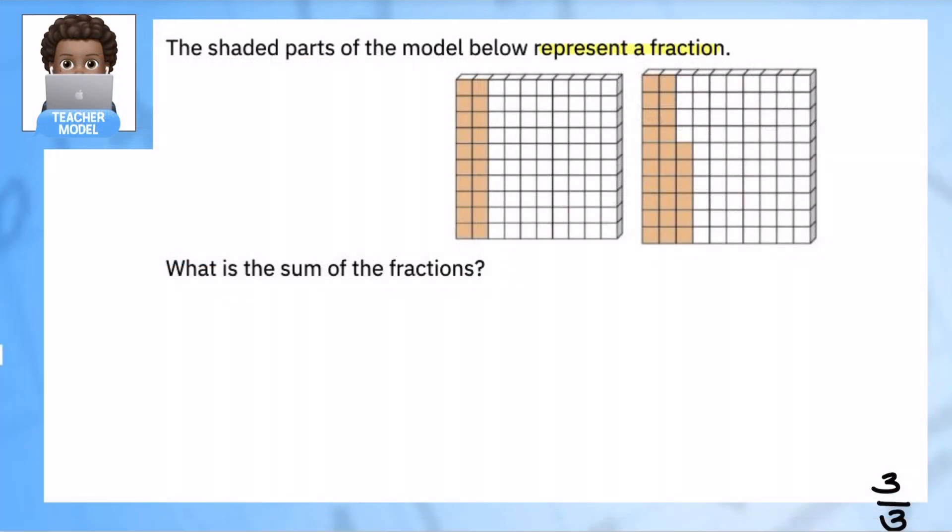The shaded parts below represent a fraction. What is the sum of the fractions? So here I have two different models. What do you see and what do you notice? And how would you represent them as a fraction? I can see two possible ways, and I bet there are a whole bunch more, and we can represent these numbers. So for example, in this first part, do you see two-tenths or do you see 20 over a hundred? Both are correct.